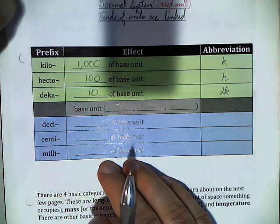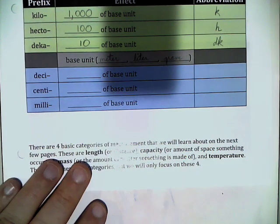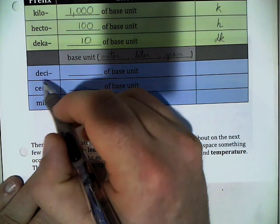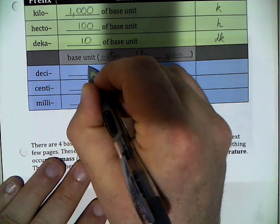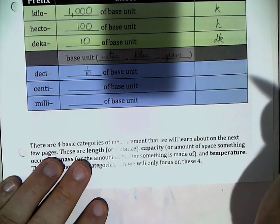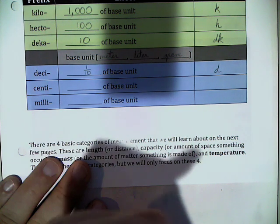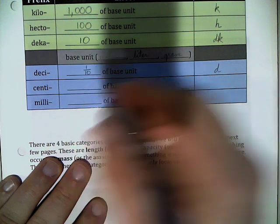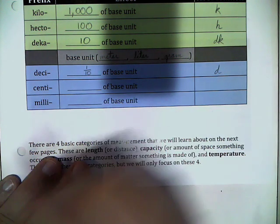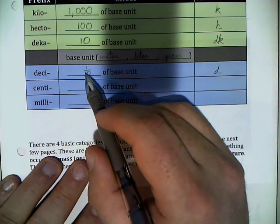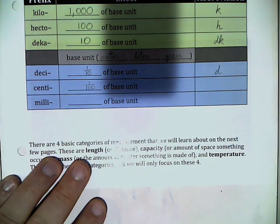Coming down into the blue, we're going the other direction — instead of getting 10, 100, or 1,000 of something, we're now cutting them into smaller pieces. DECI — with a soft C sound — means one-tenth of the base unit, abbreviated with a single D. That's probably the most confusing: we've got DECA and DECI. The hard sound means you've got 10 of them and gets the double letter; the soft C sound means you've got only a tenth.